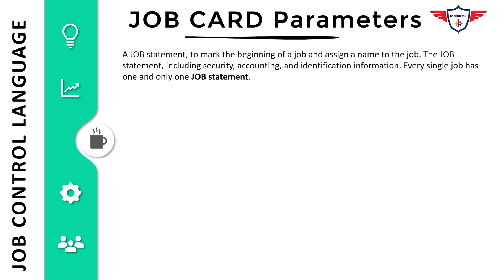A job statement is the first statement of a JCL. It marks the beginning of a job and assigns a name to that particular job. The JCL job card or job statement includes various different parameters, and remember you can only have a single job statement in your JCL.